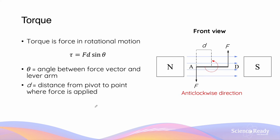Let's discuss torque in further detail. The magnitude of torque is given by the equation F × D × sin theta. F is the force applied to generate torque and rotational motion. D is the distance between the pivot point and the point where the force is being applied.